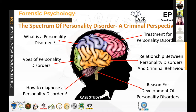The second is schizoid personality disorder, in which the person lacks interest in social and personal relationships, prefers to be alone, has a limited range of emotional expression, and an inability to take pleasure in most activities. Third is schizotypal personality disorder, in which the person has flat emotions, magical thinking — believing they can influence others with their thoughts — social anxiety, and discomfort with close relationships.